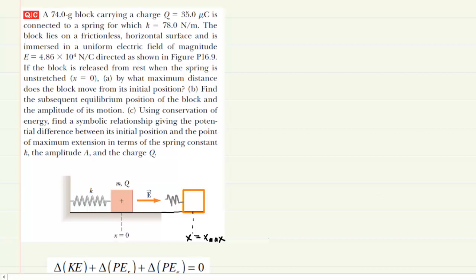In Part A, we are asked to determine the maximum distance that the block moves from its initial position. The block carries a positive charge Q and is placed in an electric field. When a positive charge is placed in an electric field pointing to the right, an electric force pushes the positive charge in the same direction. This positively charged block has an electric force pushing it to the right until it comes to rest and stretches the spring out to some maximum distance x_max.